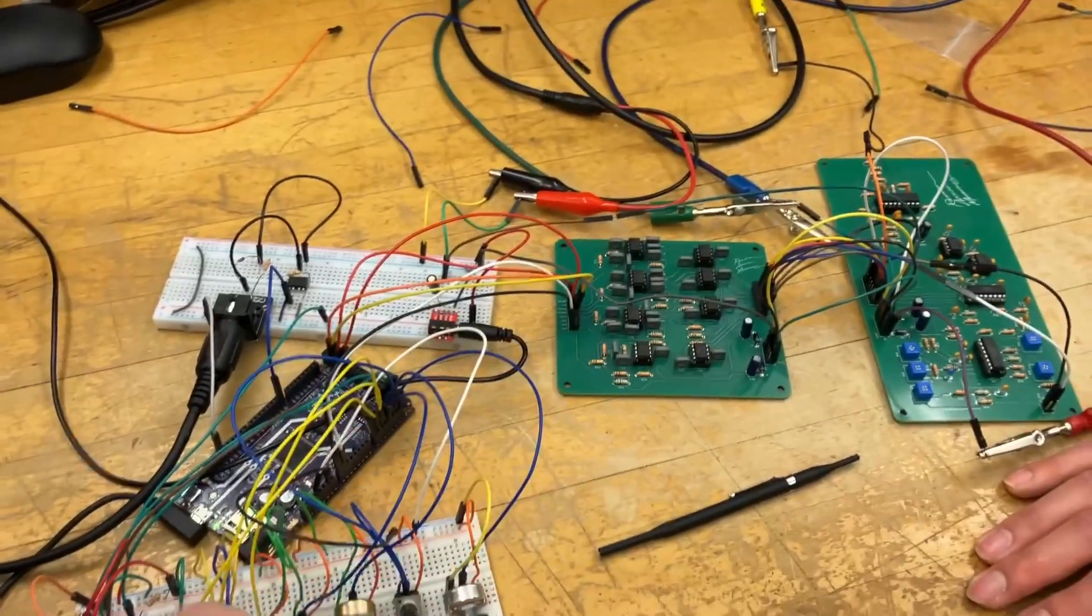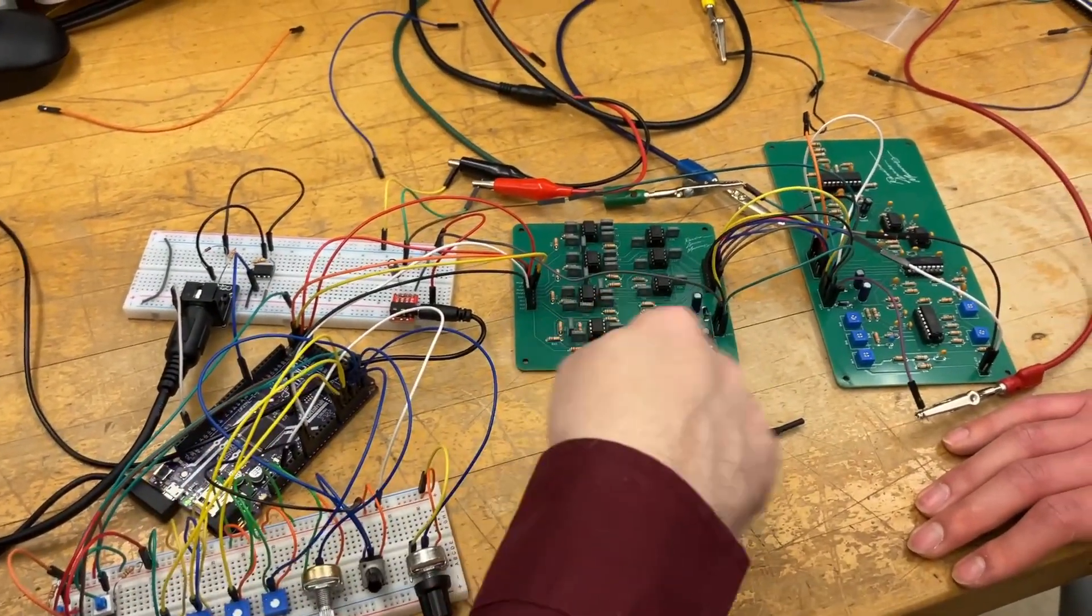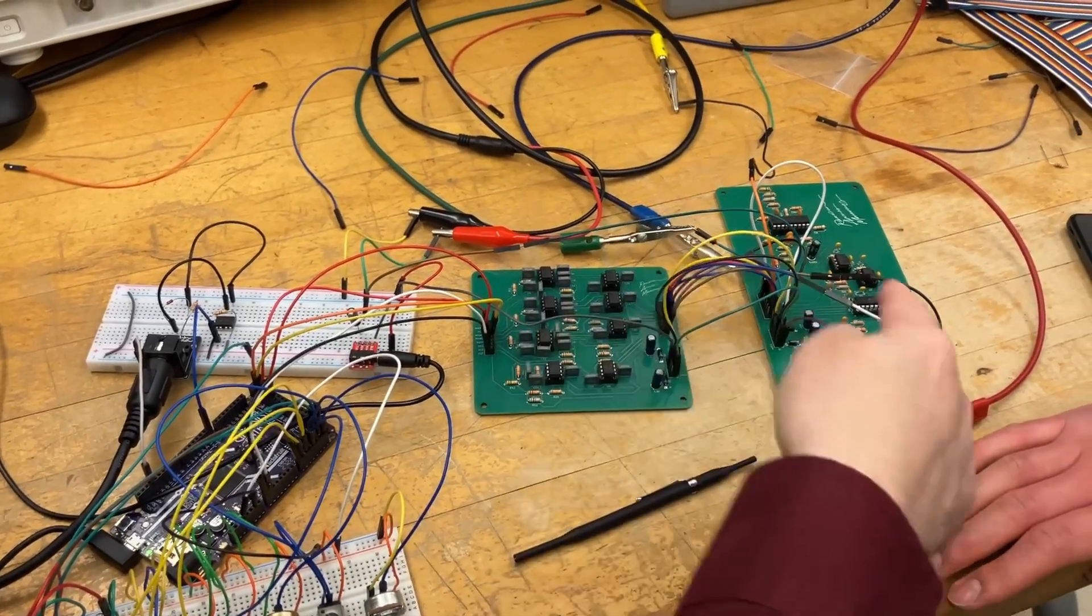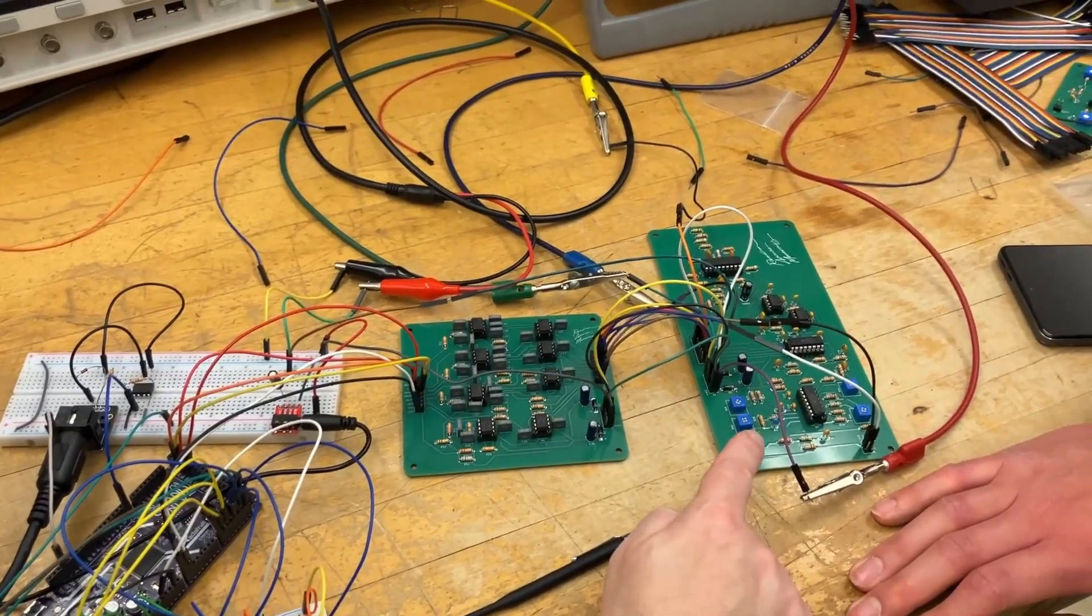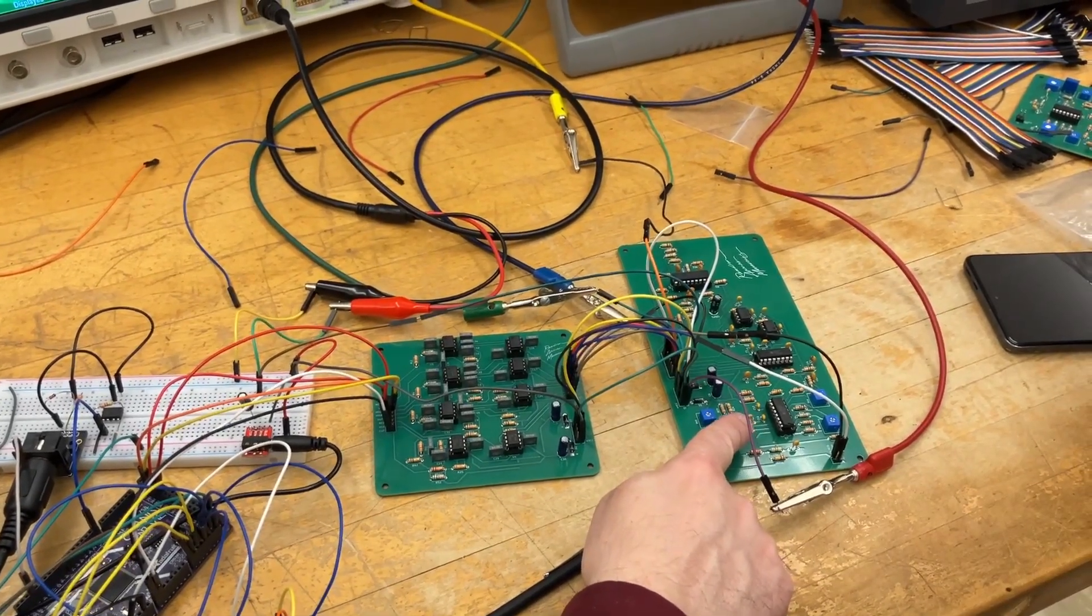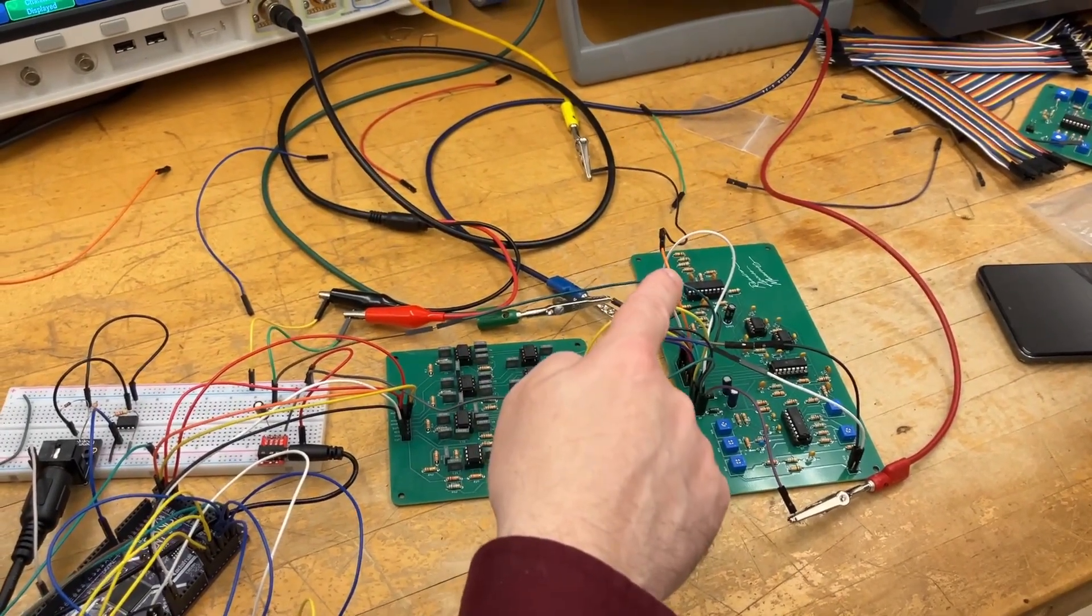The other control signals are PWM output. So they're being filtered by these Sallen-Key filters and going into the analog engine, which has a CEM 3340 VCO, a 3320 VCF.